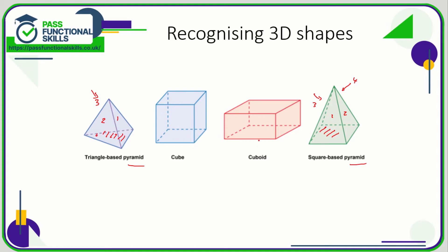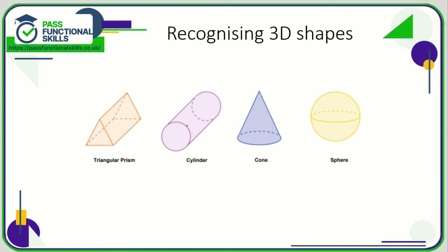A cube is basically a three-dimensional square, whereas a cuboid is a three-dimensional rectangle. With a cube the length, the width, and the height are the same, so if you're only given the length as 16, then we know the width is also 16 and the height is also 16. We can work out the volume by multiplying 16 by 16 by 16. For a cuboid it's a three-dimensional rectangle, so if it's ten by four with a depth of five, then the volume is ten times four times five.